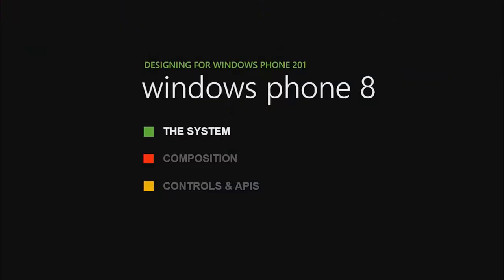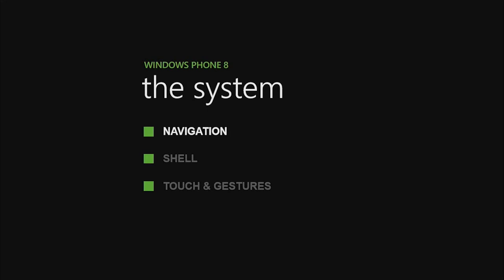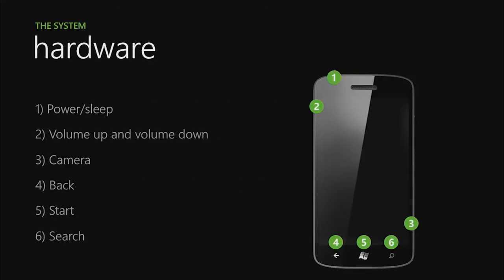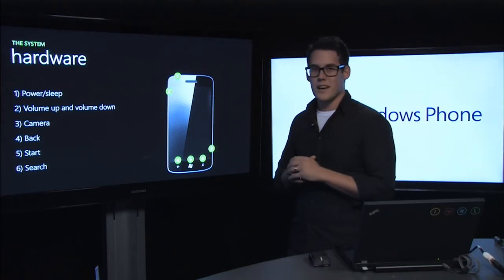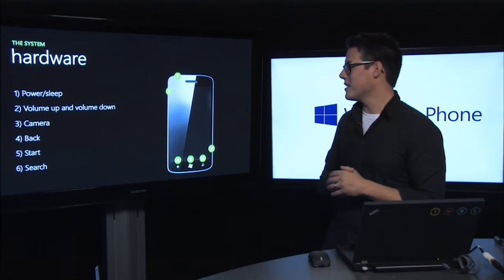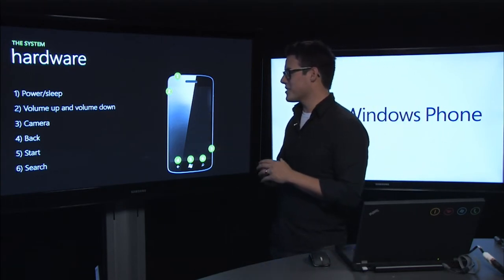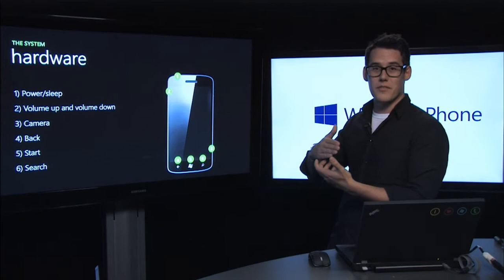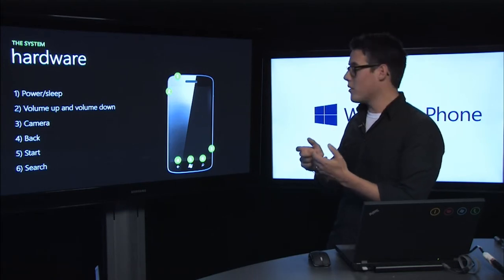The first thing we're going to talk about is the system. The first piece is the navigation model, but you wouldn't be able to talk about navigation without the hardware. We have a hardware spec, and obviously there are lots of different manufacturers and OEMs making great phones like HTC and Nokia. But every single phone has similar traits — every phone has a power and sleep button. We have volume up and down, which controls the volume but also shows and hides UI that lets you skip forward and backward through tracks.